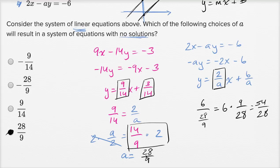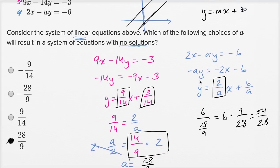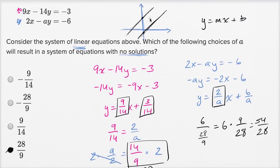Which is clearly different than 3 over 14. So if a is 28 over 9, same slope, different y-intercepts. And you're dealing with parallel lines. They will not intersect. And you're going to have no solutions.